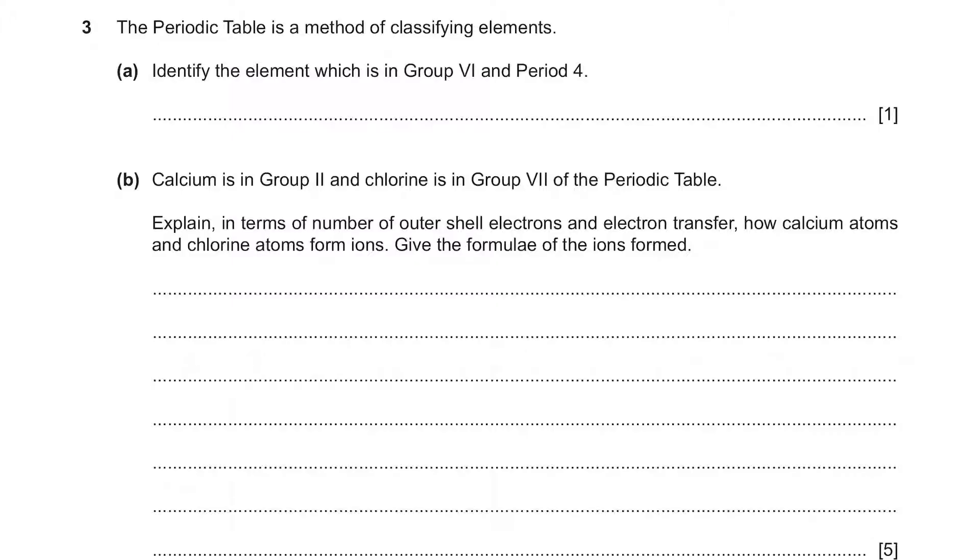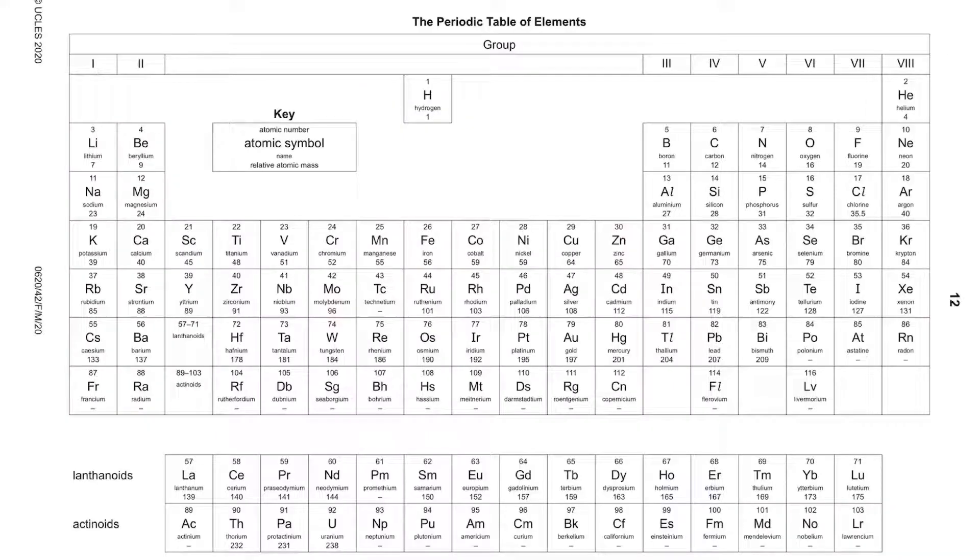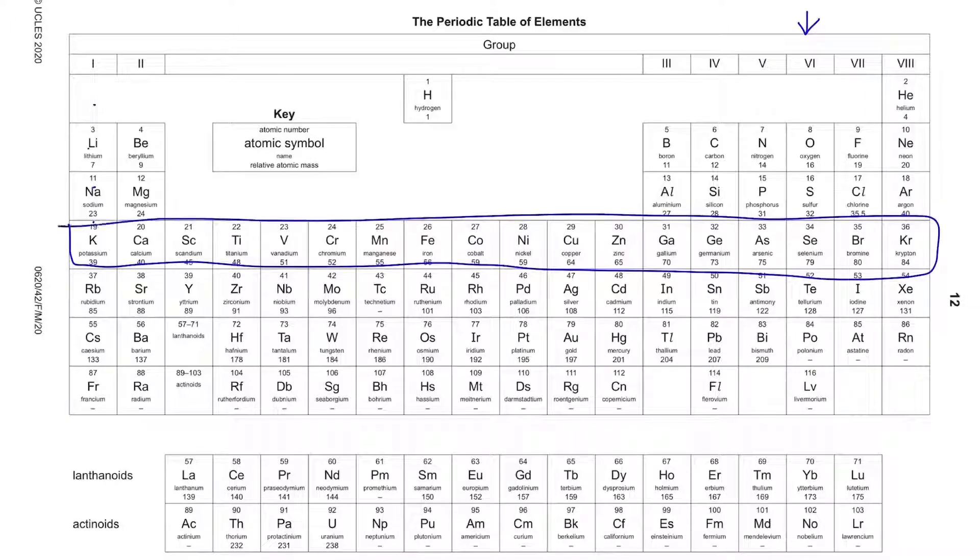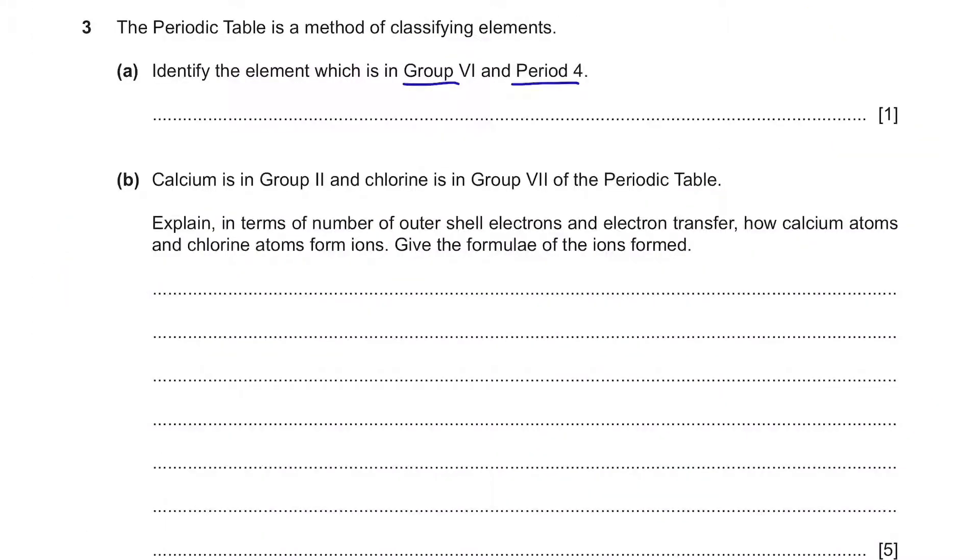Question 3. The periodic table is a method of classifying elements. Identify the element which is in group 6 and period 4. So we just have to take a look at the periodic table which will be given in the last page of our exam paper. This will be period 4 and this will be group 6. So the one over here is selenium.